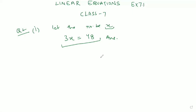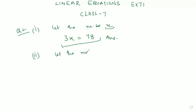Now let's move to the second part. The second part is: 2 times of a number added to 9 gives 13. We will assume the number be y. 2 times of a number means 2y, and added to 9 gives 13. So our equation is 2y + 9 = 13.